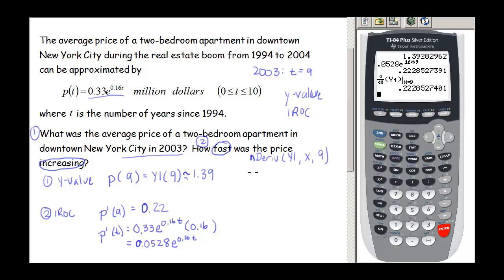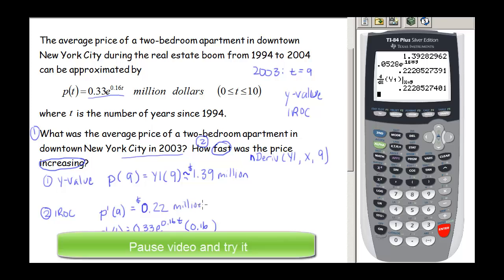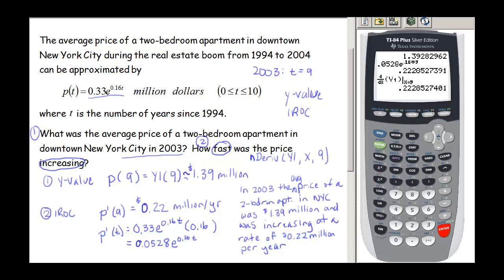The units on the Y value are $1,000,000 and the units on the derivative are $1,000,000 per year. Writing a sentence: in 2003, the average price of a two-bedroom apartment in New York City was about $1.39 million and was increasing at a rate of $0.22 million per year.